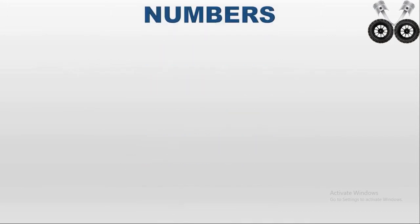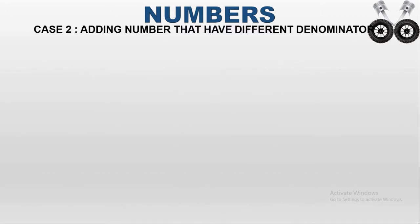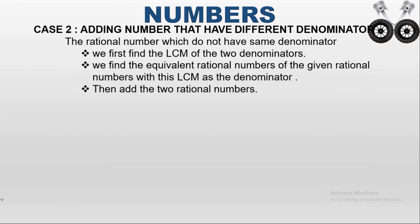Next is Case 2: adding numbers that have different denominators. If we want to add 2 rational numbers with different denominators, first we have to find the LCM of the denominators. After finding the LCM, we find the equivalent fractions — making the denominators equal — and then add the 2 rational numbers.